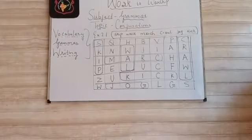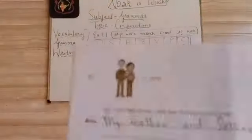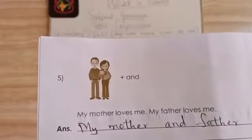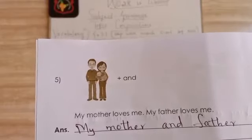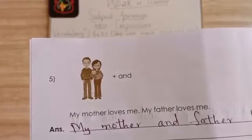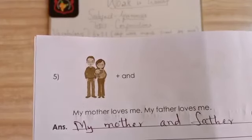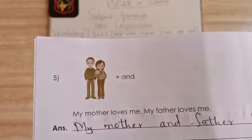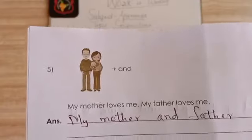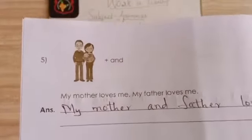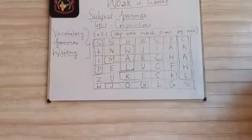Fifth example: 'My mother loves me and my father loves me' — using the plus sign means you add 'and', so the sentence is 'My mother and father love me.' Sixth: 'It is raining so I will carry an umbrella.' So children, let's meet in our next session. Till then, goodbye and thank you.